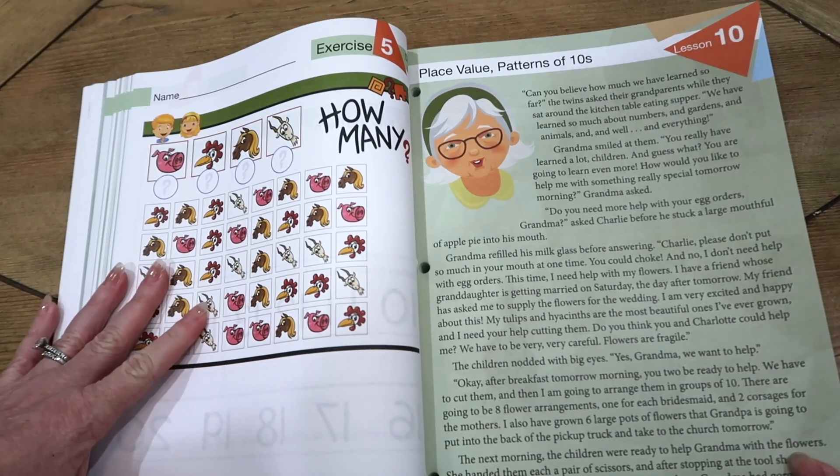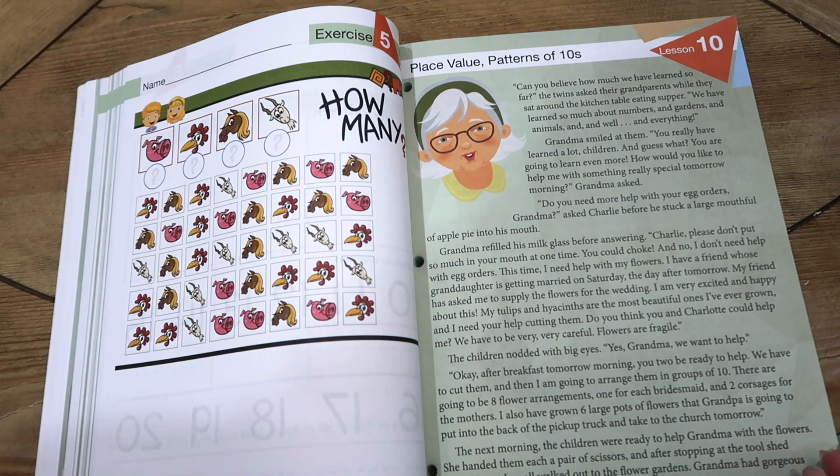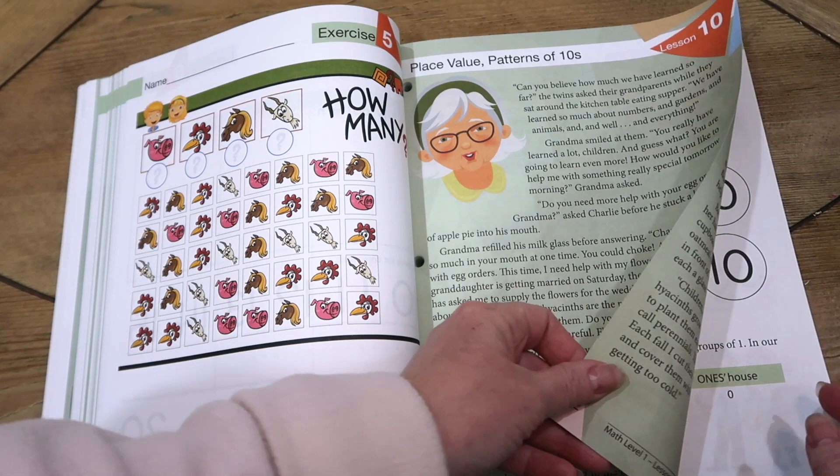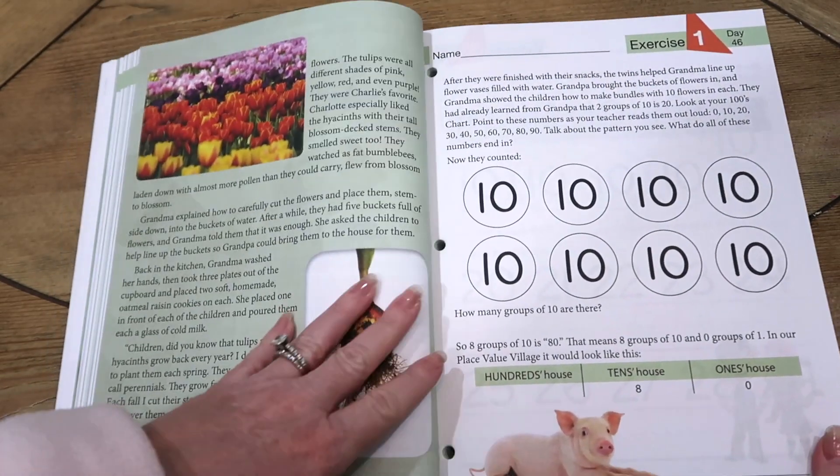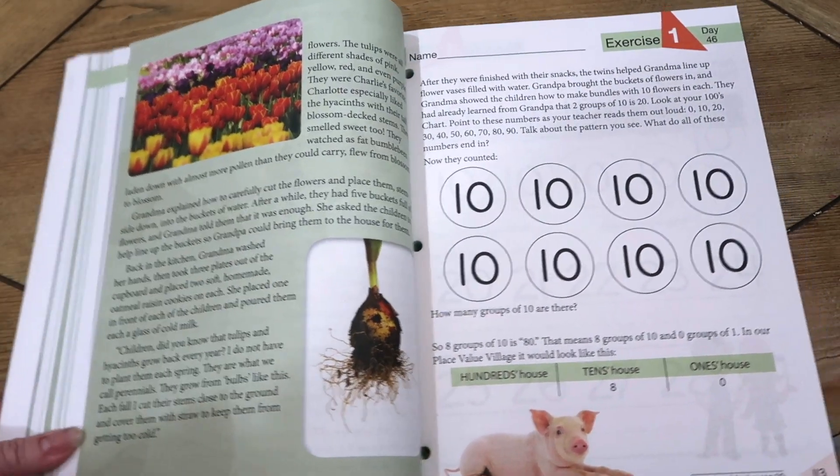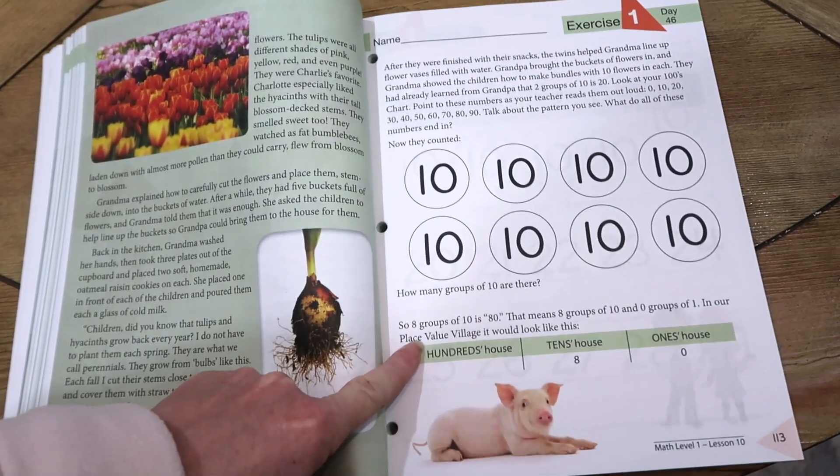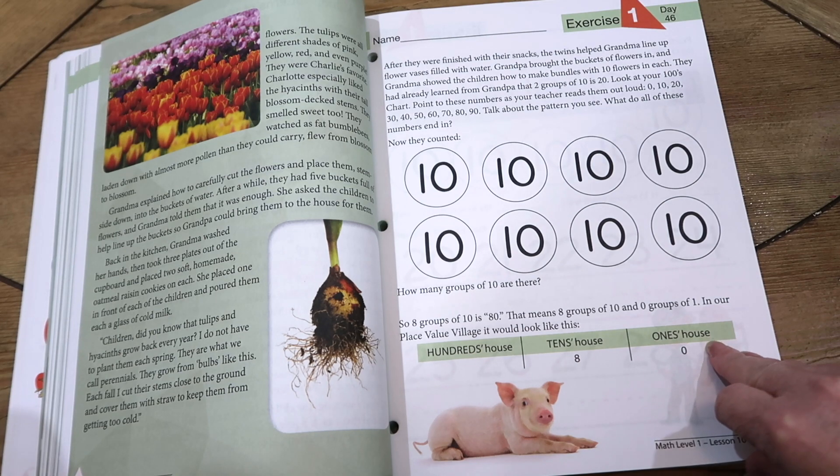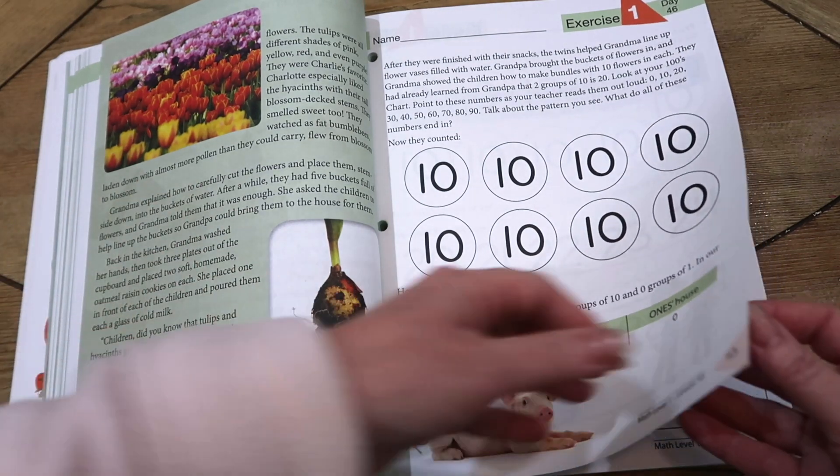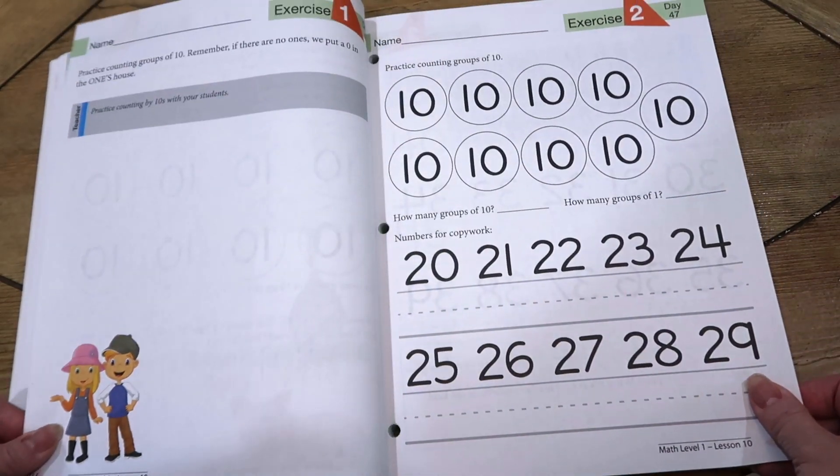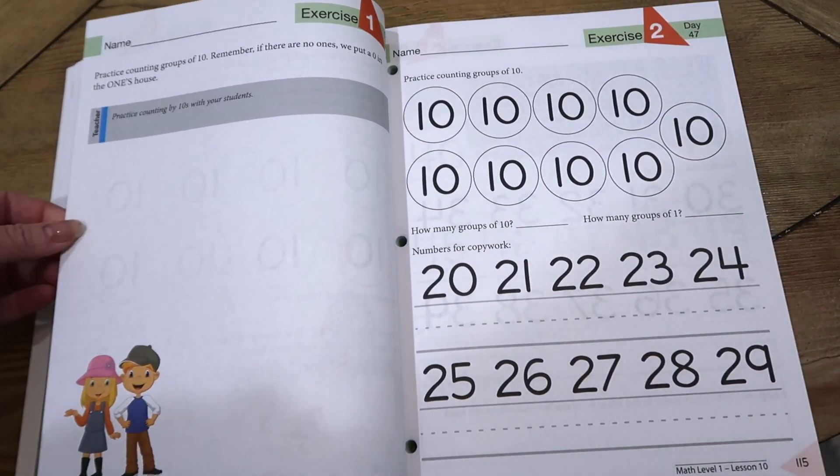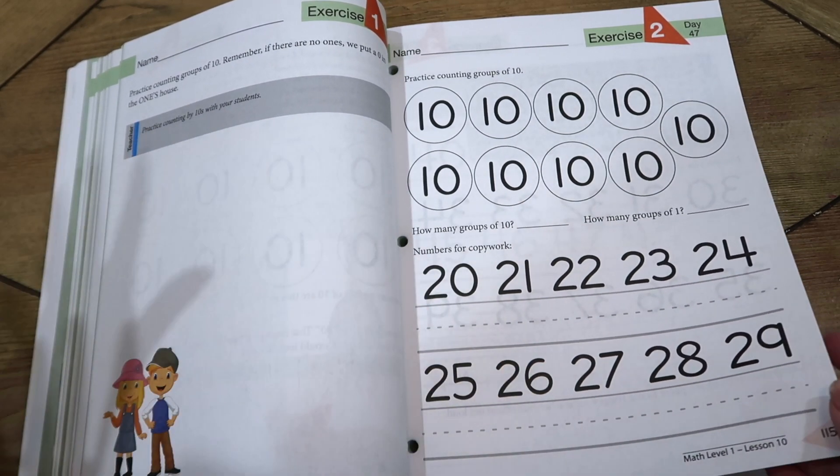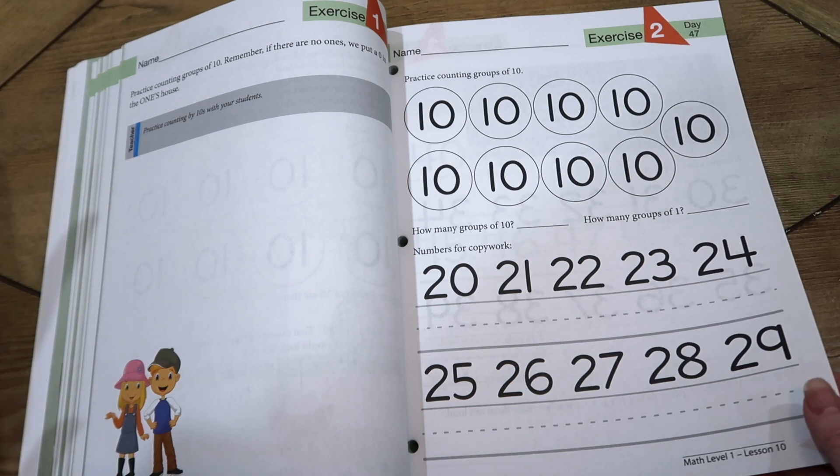For example, this is lesson 10 on place value and patterns of 10. Here's the lesson and it reads like a story, so you read that to the child and do the things that it says to do with them. This would be their worksheet for that day, day 46 or day 1 of that week. You can do one per day or more depending on how many school days you do in a week. Sometimes the lesson will be two pages, but usually it's just one page.